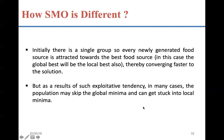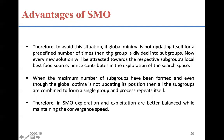In other algorithms, the entire population works together throughout all iterations. But in SMO, initially the entire population works as a single group to generate new food sources and is attracted towards the best food source, thereby converging faster. The convergence rate towards the promising region of the search space is initially very fast. However, because of this fast speed, the population may skip the global optimum due to large step sizes and can get stuck at a local optimum.